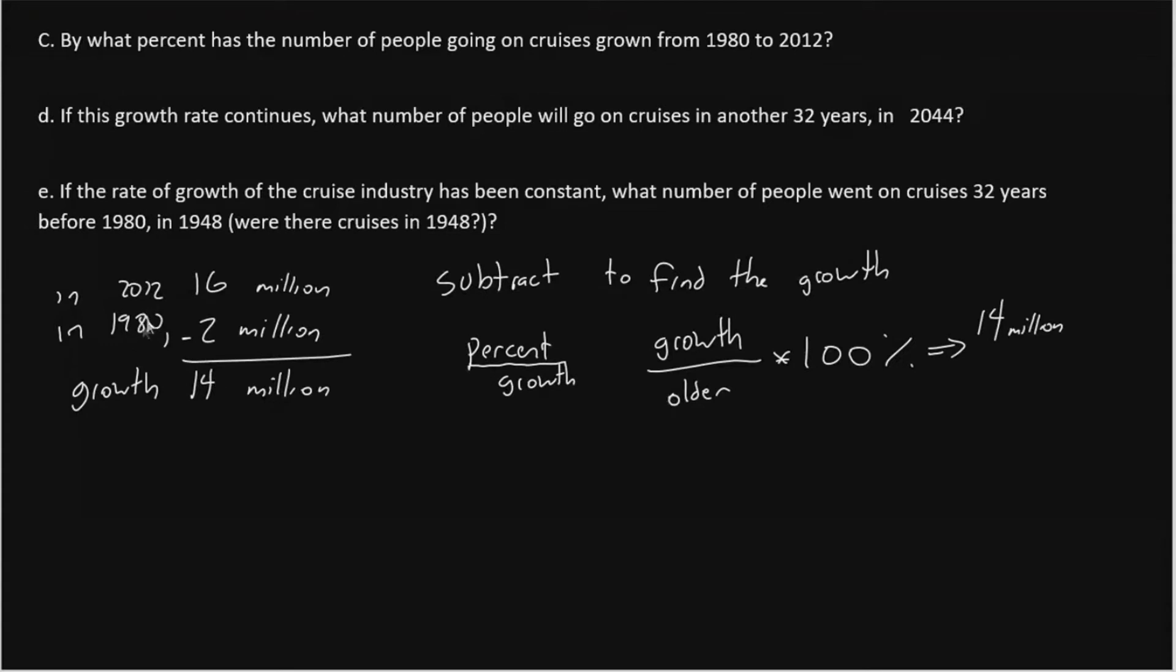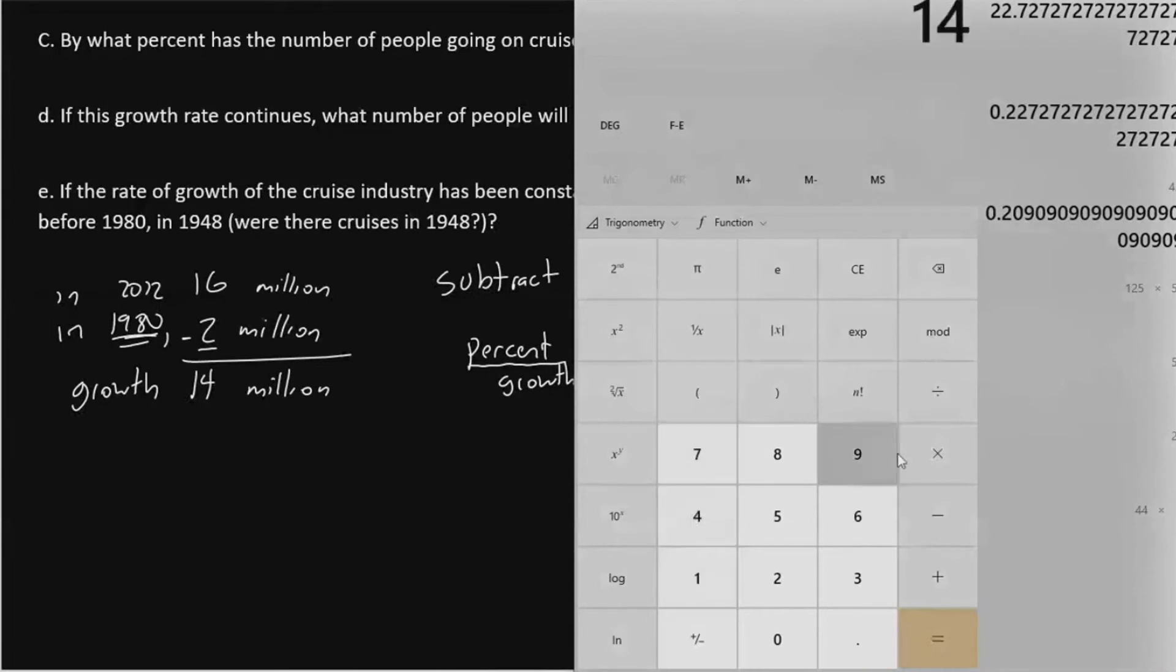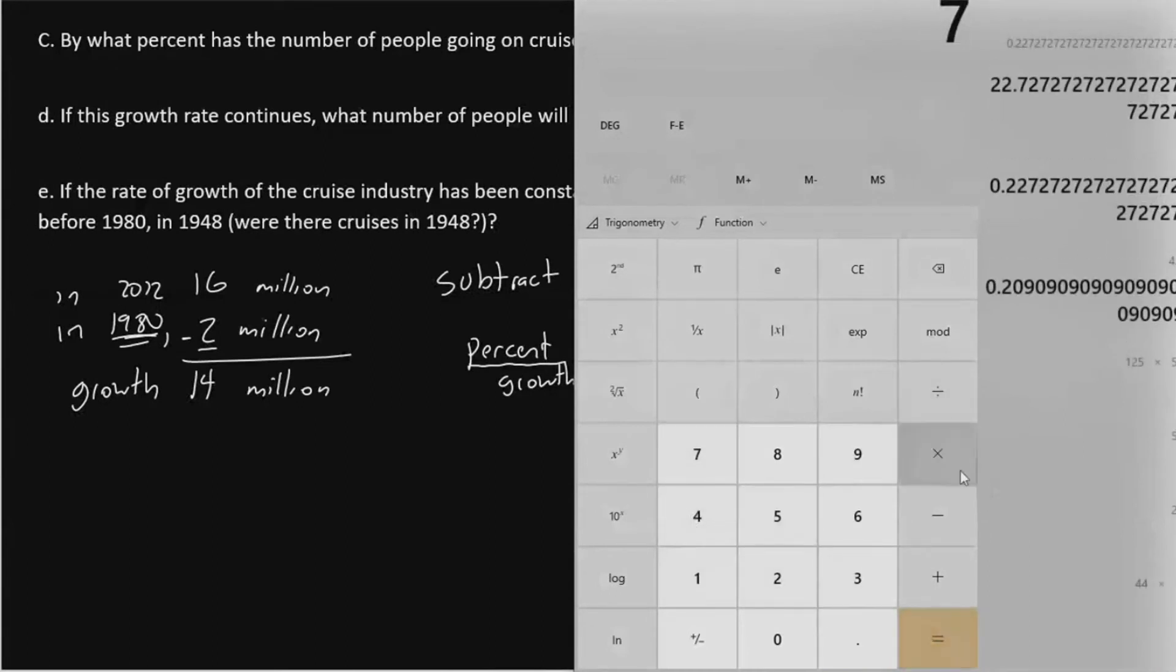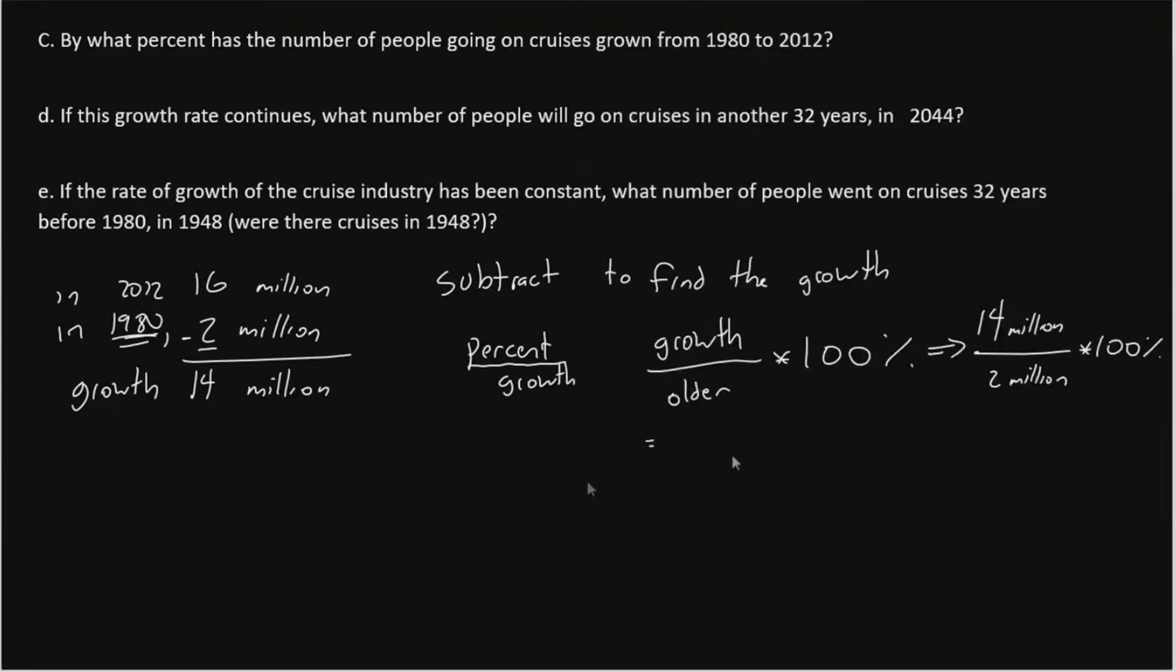So we're going to think about this in chronological order. 1980 happened before 2012, so 1980 is the year we need to look at. So we'll say over 2 million, and then multiply by 100 to change this into percent. So in our calculator, we say 14 divided by 2 times 100. 14 divided by 2 is indeed 7, multiply by 100 gives 700%.